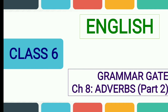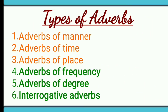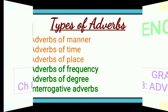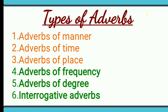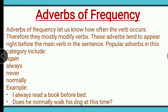Those were the three types of adverbs from the previous class. Today we'll continue with three more topics: adverbs of frequency, adverbs of degree, and interrogative adverbs. If the first three types are not yet clear, you can go back and watch yesterday's English class video. Now let's start — the first topic we will cover today is adverbs of frequency.